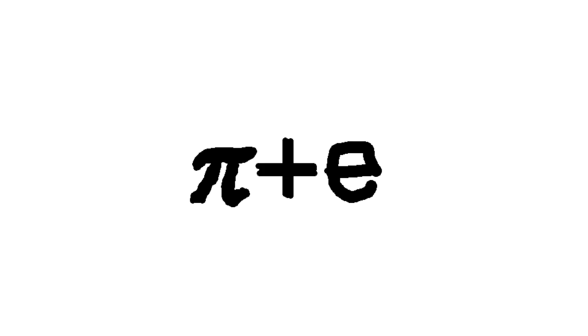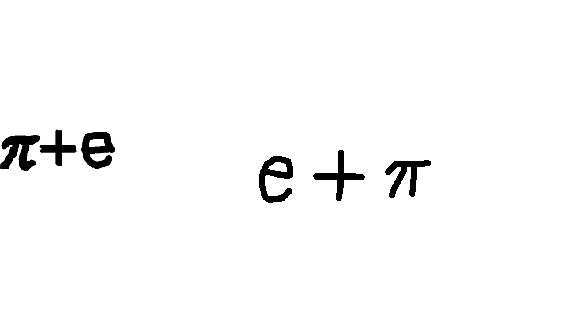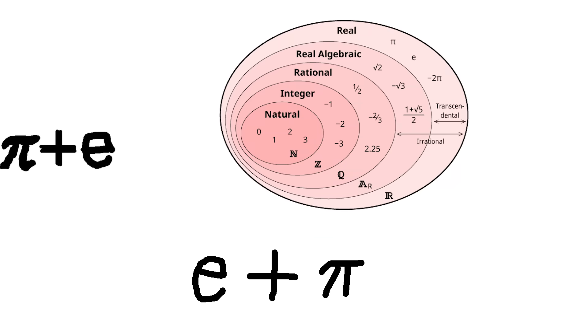The Enigma of Pi plus E. Given everything we know about two of math's most famous constants, pi and e, it's a bit surprising how lost we are when they're added together. This mystery is all about algebraic real numbers.